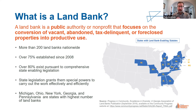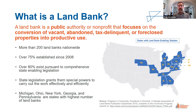Michigan, Ohio, New York, Georgia, and Pennsylvania are the states with the highest number of land banks — in fact, 75 percent of all land banks in the country are in these five states. They all have state land bank associations, which are incredible resources for network and information sharing and peer-to-peer learning. We'll talk more about that later in the context of the National Land Bank Network.